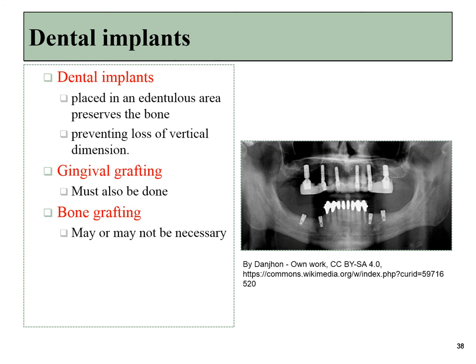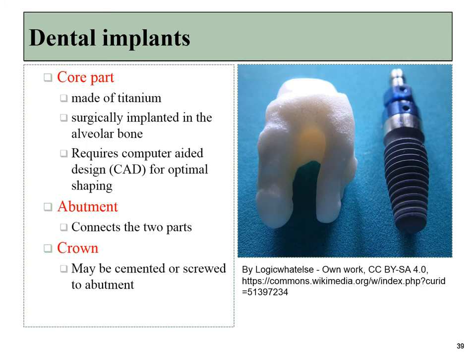With a dental implant, there's often a need to repair lost bone tissue, so cadaver bone grafting may be done first. Once healed, we can implant the artificial teeth and possibly do some gingival grafting as well — making this a significant series of operations. The typical dental implant is made of a titanium core with an abutment that connects to the crown, which may be formed out of some type of ceramic.